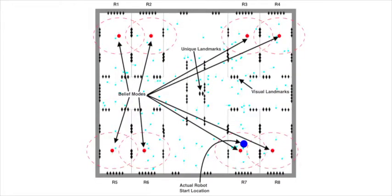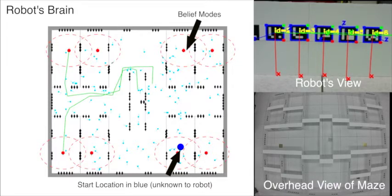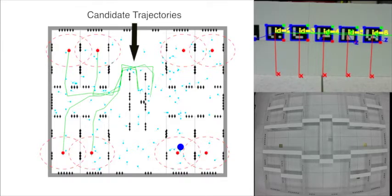The robot is randomly placed in one of the rooms and the planner is started with no prior information about the robot state. Thus, the initial belief is multi-modal as the robot thinks it could be in any one of the eight rooms. The goal of the planner is to control the robot in such a way that the information observed leads to a uni-modal belief.